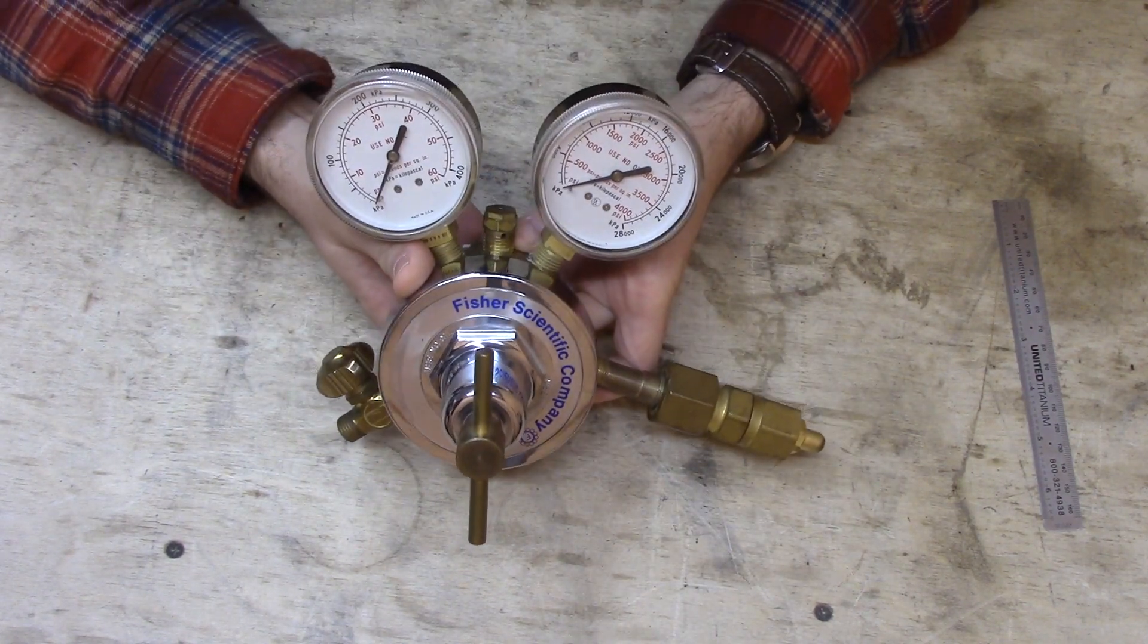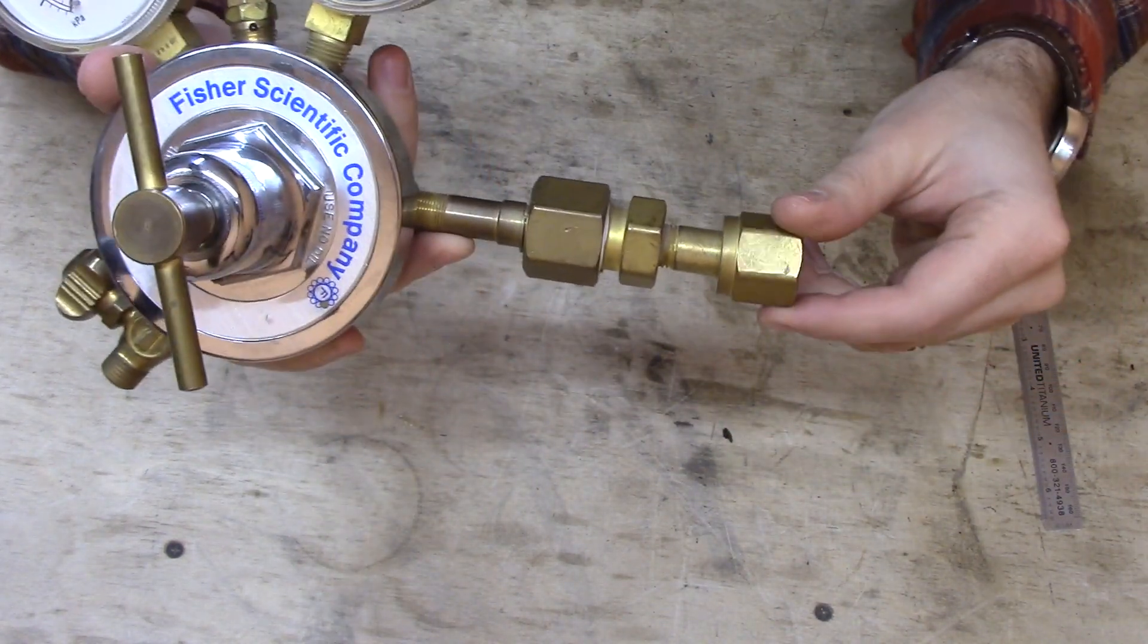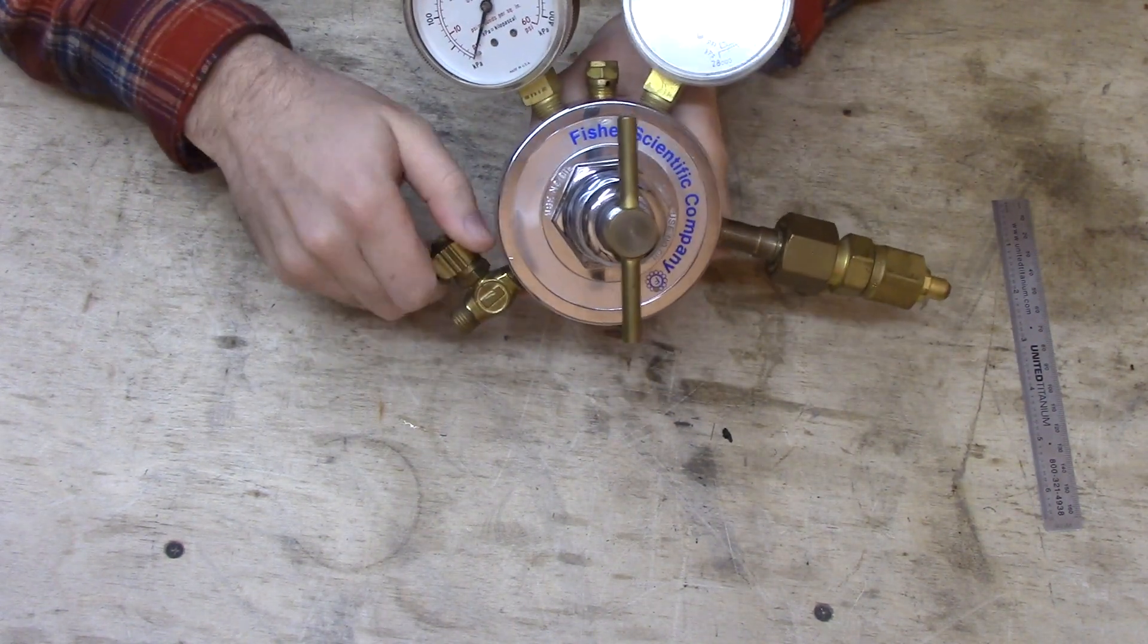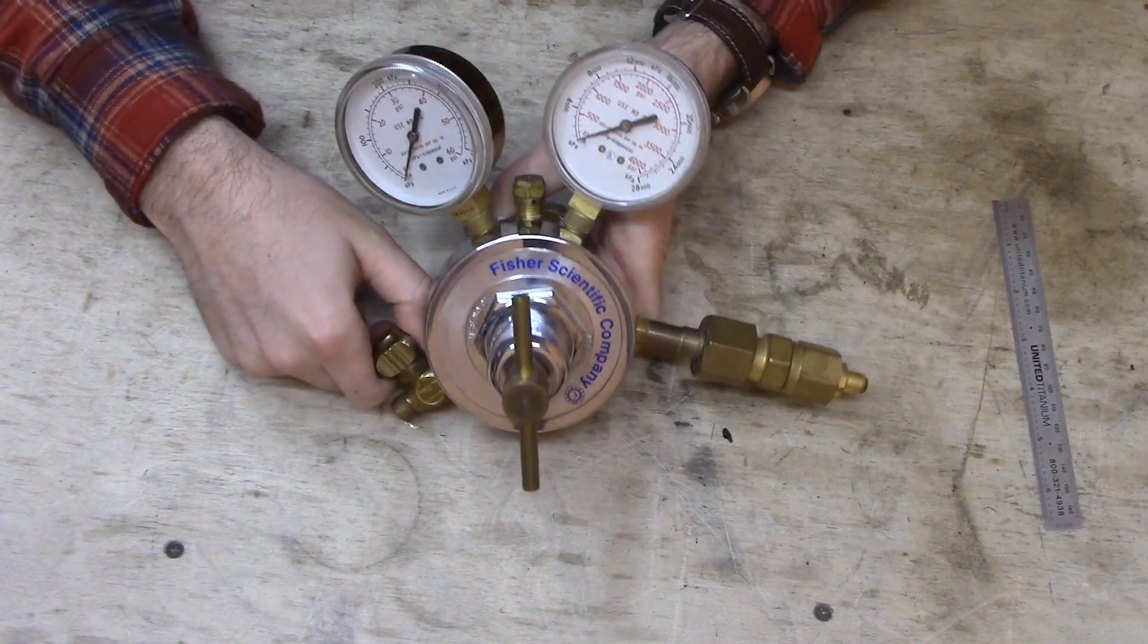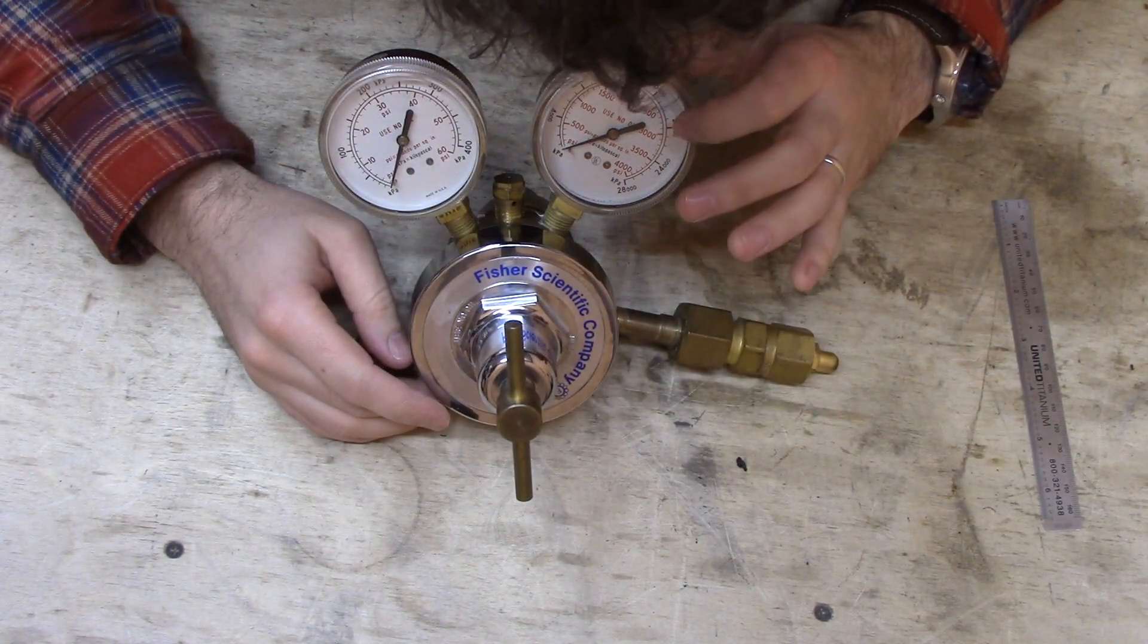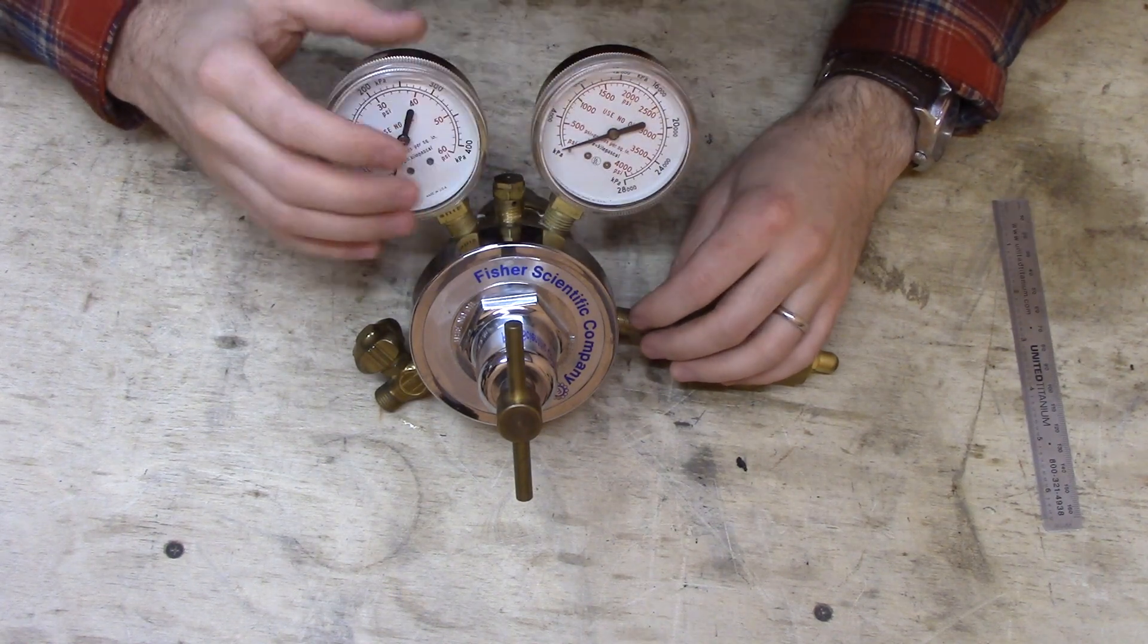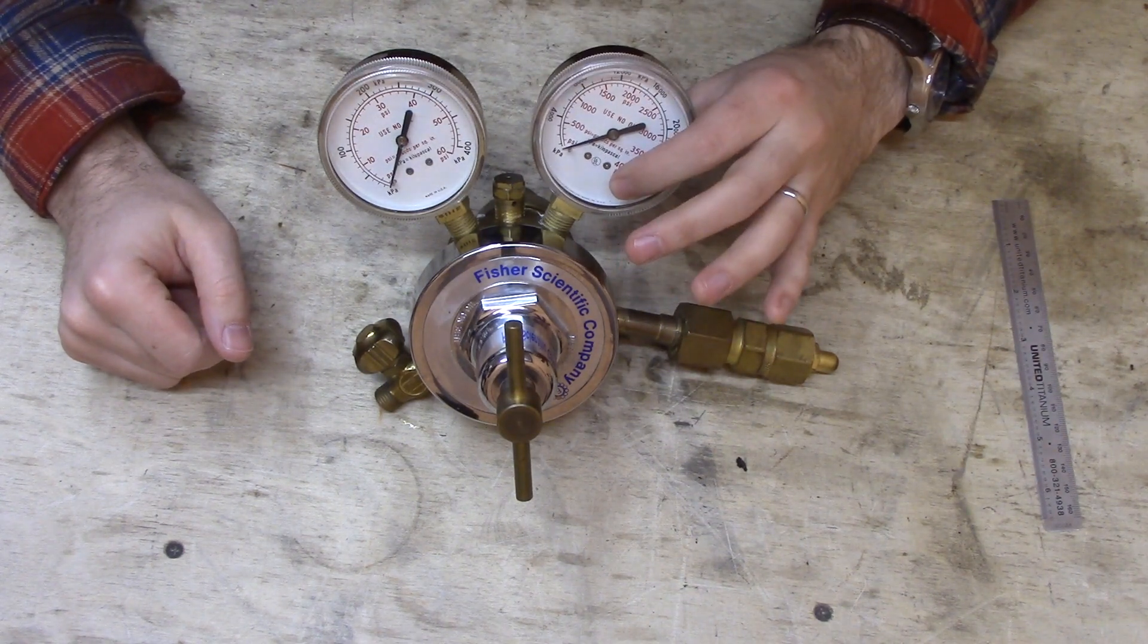What this does is you connect this side to an oxygen tank and this side goes to some kind of medical experiment or something you need just a small trickle of oxygen for. So the oxygen coming in might be at 4,000 or 3,000 psi, which is a lot of pressure, and the output is somewhere less than 60 psi.